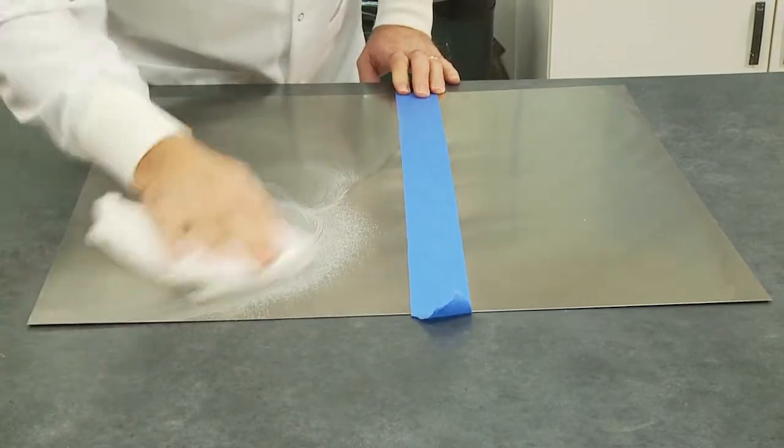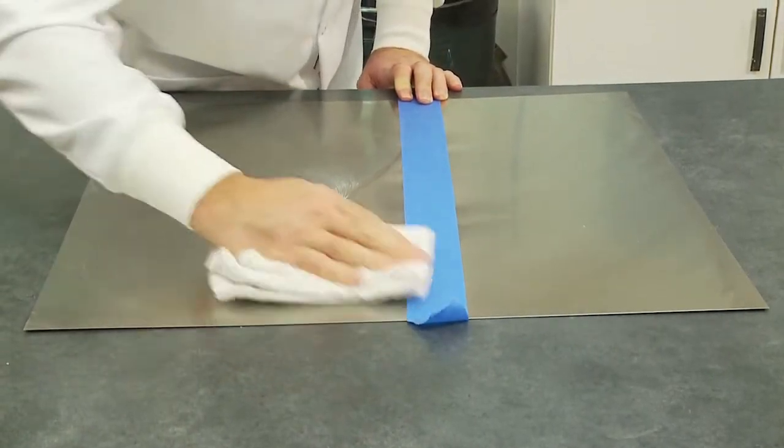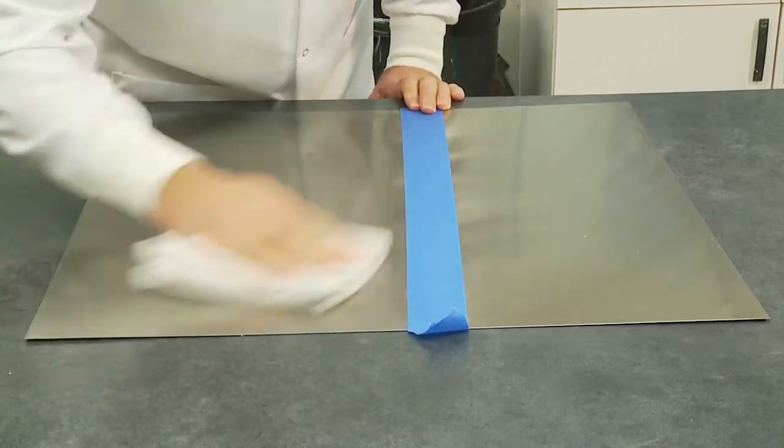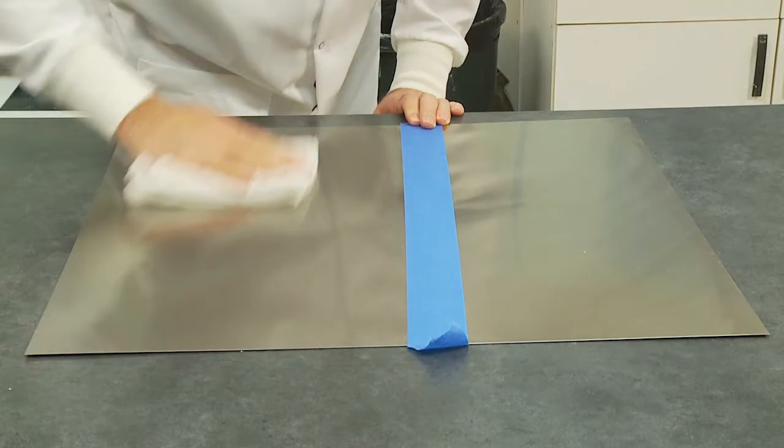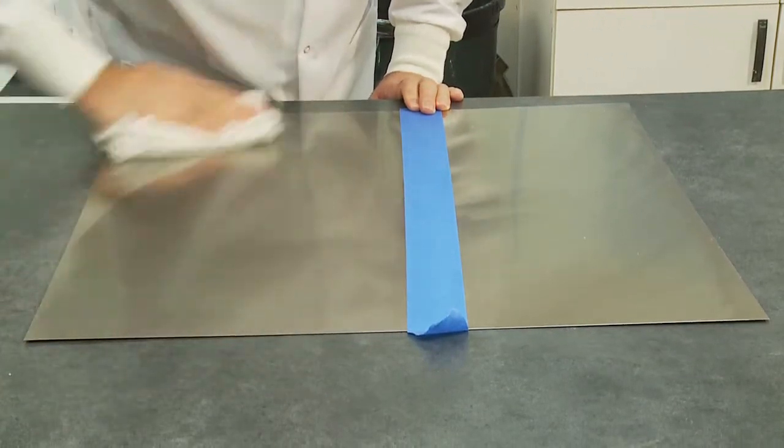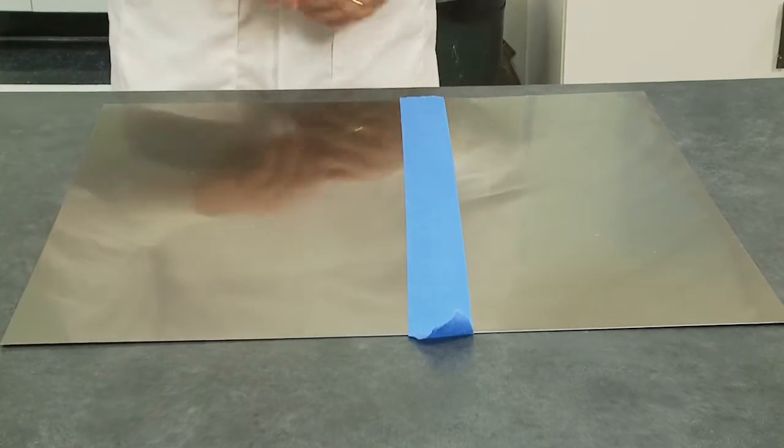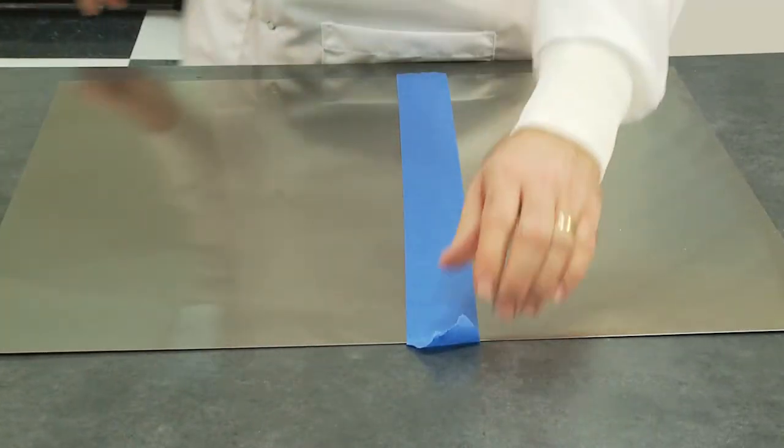I'm going to rub the product in, in circles, just as if I were waxing a car. You can see that the product eventually evaporates and dries and you can still work the polymers into the surface. It gives you a nice streak-free shine. If I pull this tape off, you can see the treated side versus the untreated side.